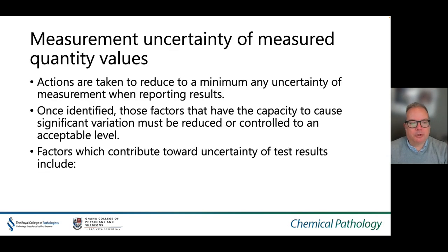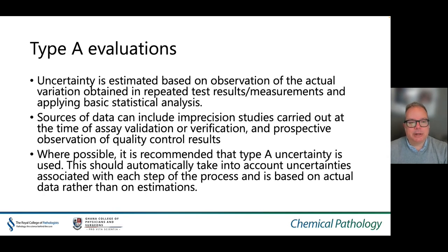Regarding measurement uncertainty of measured quantity values, actions are taken to reduce to a minimum any uncertainty of measurement when reporting results. Factors that have the capacity to cause significant variation must be reduced or controlled to an acceptable level. Factors which contribute to uncertainty include Type A evaluations, where uncertainty is estimated based on actual variation obtained by repeat tests or measurements and applying basic statistical analysis. Sources of this data can include imprecision studies carried out at the time of assay validation or verification, or prospective observation of quality control results. Where possible, it is recommended that Type A uncertainty is used as this automatically takes into account uncertainties associated with each step of the process and is based on actual data rather than estimations.